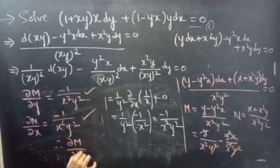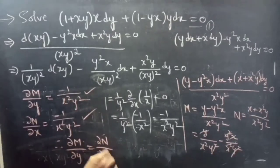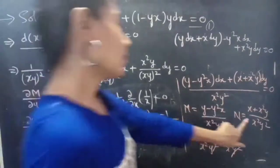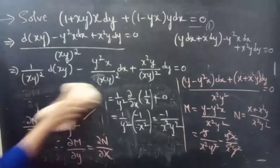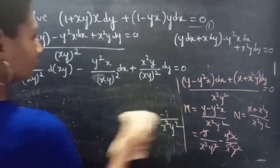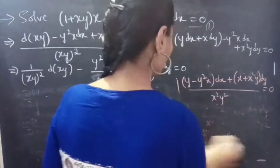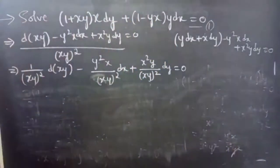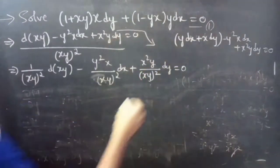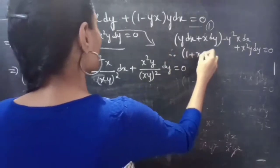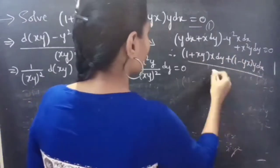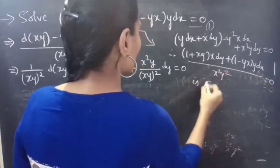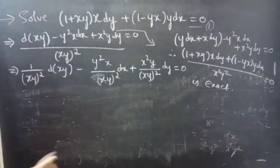So therefore ∂M/∂y = ∂N/∂x, both equal to −1/(x²y²). We can also rename these as M₁ and N₁ from the reduced equation. So from this we can say that the reduced equation is an exact equation.